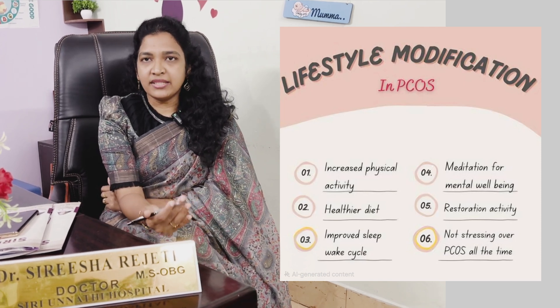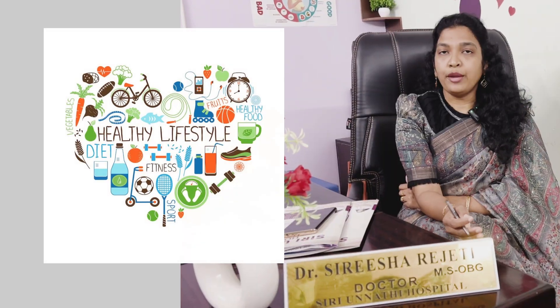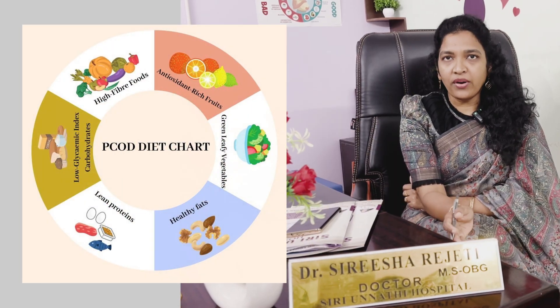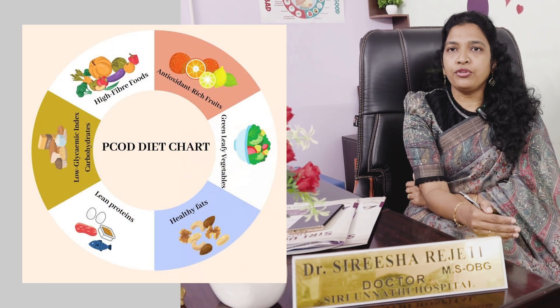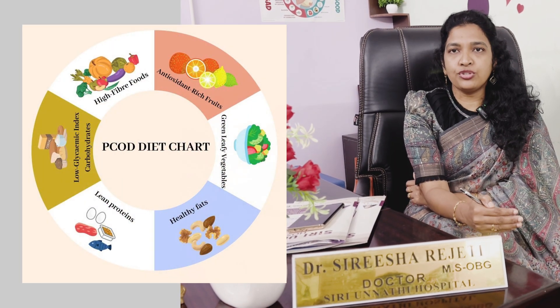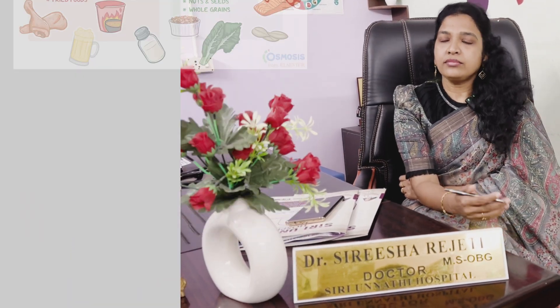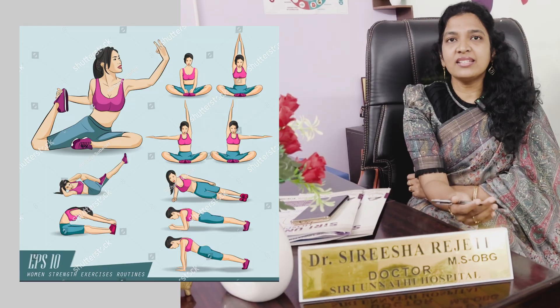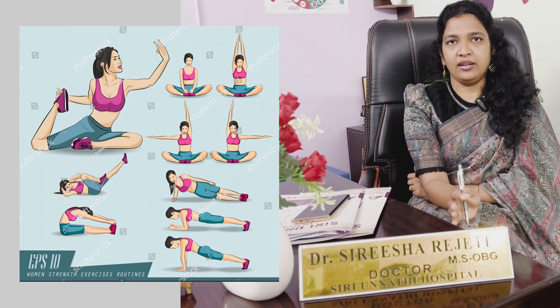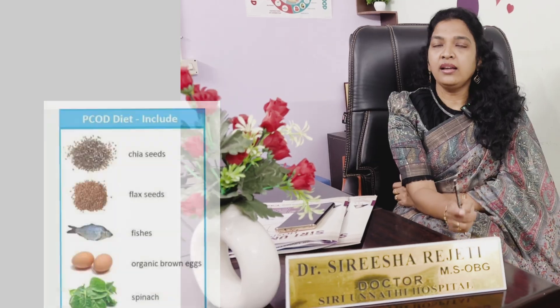Avoid a sedentary lifestyle. Eat a balanced diet — a high protein diet. Cut short your carbohydrates and reduce packed food and added sugars. Avoid processed food as well. Exercise regularly, at least 30 minutes a day. Maintain a healthy diet.